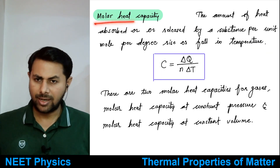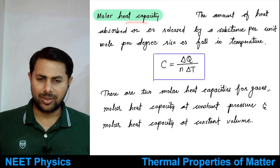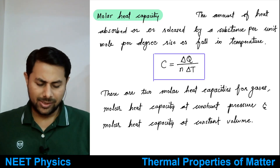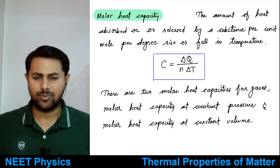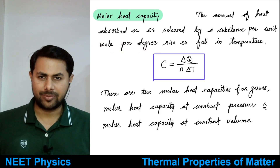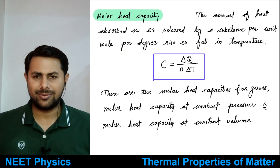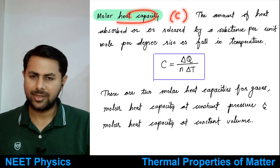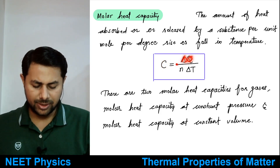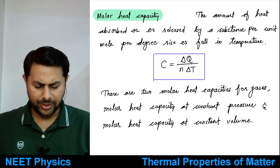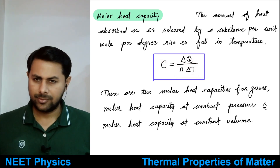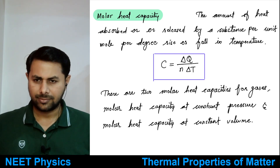Next is molar heat capacity. The amount of heat absorbed or released by a substance per mole per degree rise or fall in temperature is known as molar heat capacity, denoted by C. So C = delta Q divided by n times delta T, where n is the number of moles and delta T is the change in temperature.